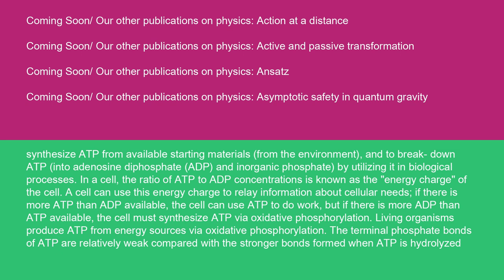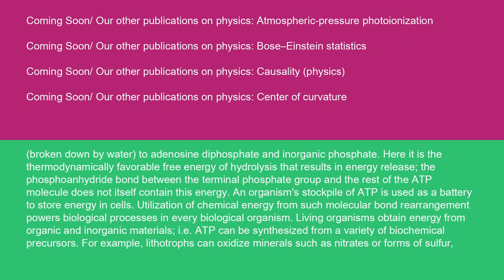Living organisms produce ADP from energy sources via oxidative phosphorylation. The terminal phosphate bonds of ADP are relatively weak compared with the stronger bonds formed when ADP is hydrolyzed — broken down by water — to adenosine diphosphate and inorganic phosphate. Here it is the thermodynamically favorable free energy of hydrolysis that results in energy release. The phosphoanhydride bond between the terminal phosphate group and the rest of the ADP molecule does not itself contain this energy. An organism's stockpile of ADP is used as a battery to store energy in cells.